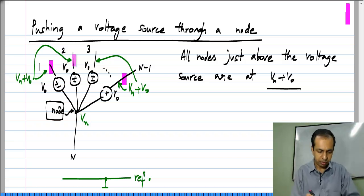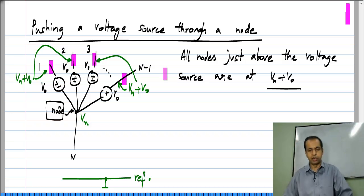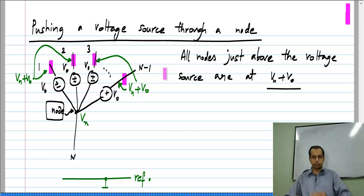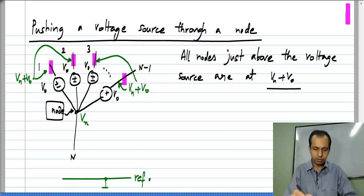So all these nodes are at exactly the same voltage. It turns out that if you have different nodes with the same voltage in a circuit, you can connect them together with a wire without altering anything else in the circuit. I will show you an example.